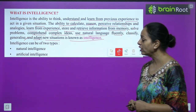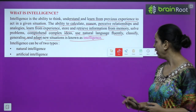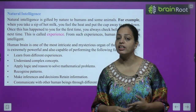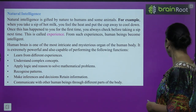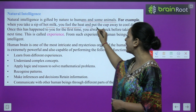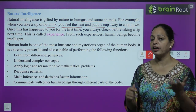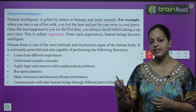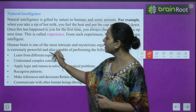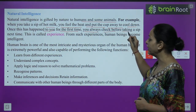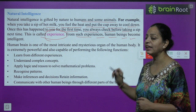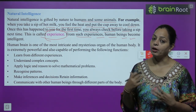Intelligence can be of two types: natural and artificial. Natural intelligence is gifted by nature to humans and some animals. For example, when you take a sip of hot milk, you feel the heat and put the cup away to cool down. Once this happens the first time, you always take care before taking a sip next time. This experience makes human beings intelligent.